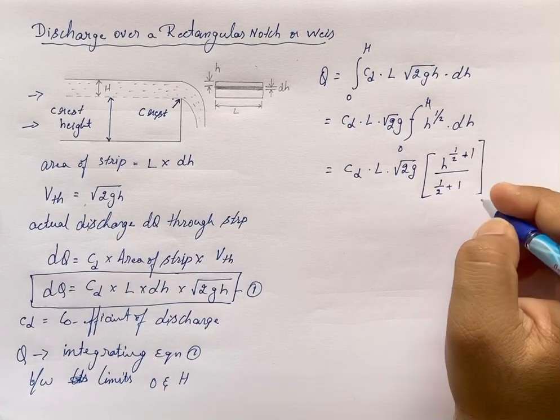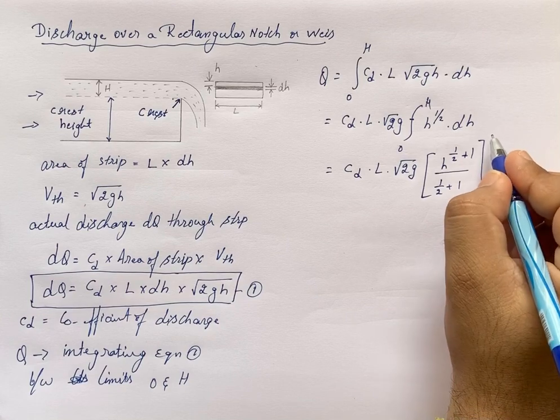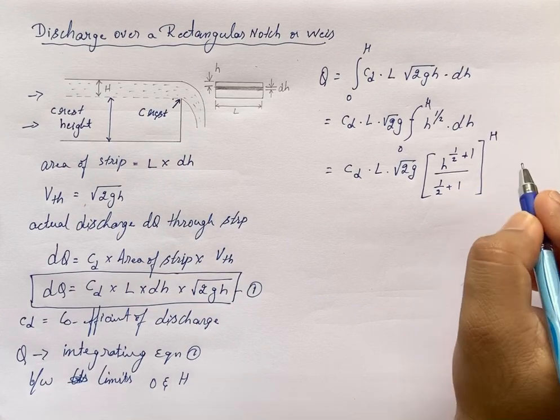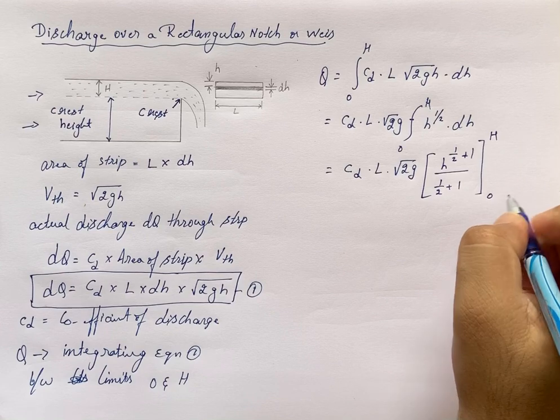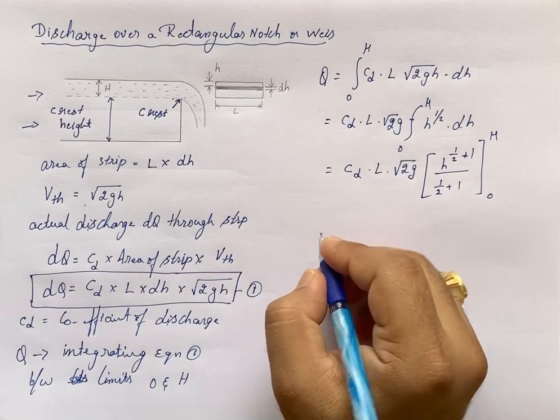Integration of x^n is x^(n+1)/(n+1), evaluated between the limits 0 and H.